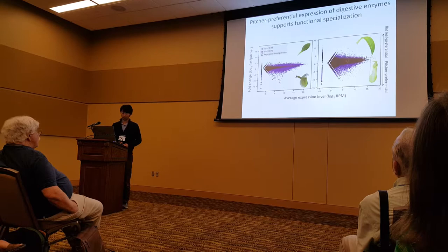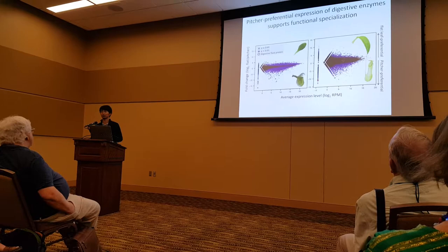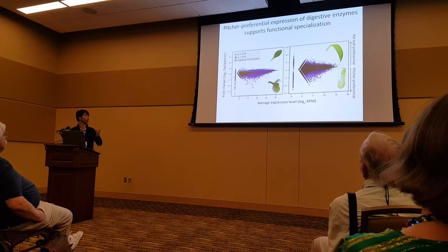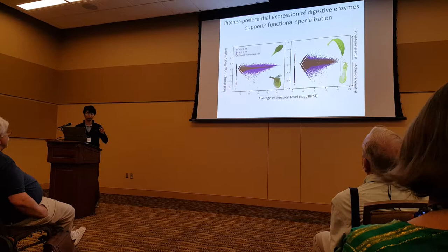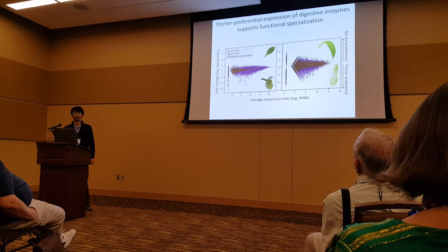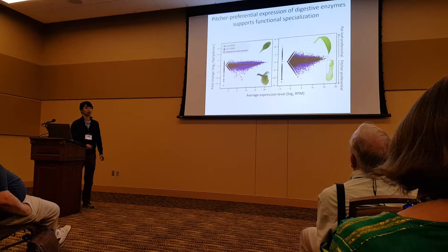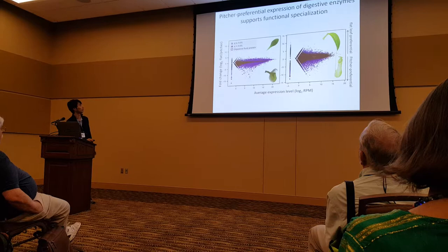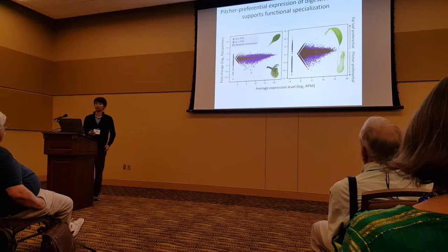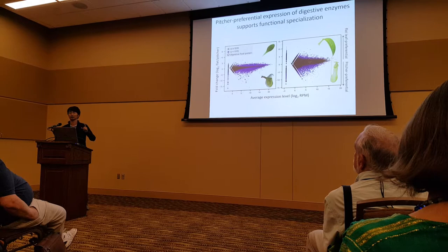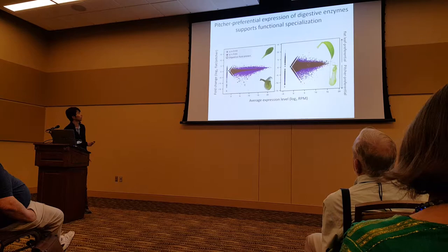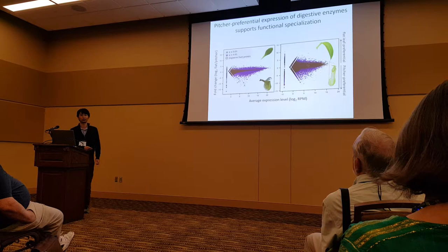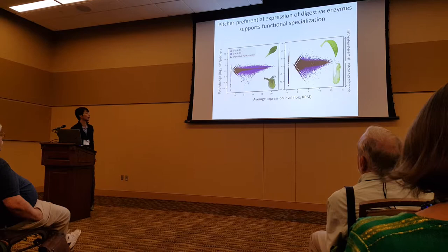The next question is whether digestive fluid proteins are bifunctional between defense and digestive functions, or whether they are specialized for digestive functions. We haven't got any solid answer yet, but transcriptome analysis gave us some insight. We sequenced the transcriptomes of two species of pitcher plants and compared gene expression of flat and pitcher leaves. This species shows phenotypic plasticity where they produce either completely flat photosynthetic leaves or carnivorous pitcher leaves, so you can compare gene expression of non-carnivorous and carnivorous organs.